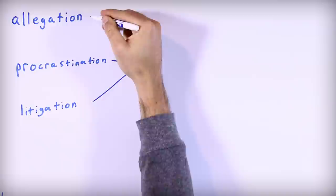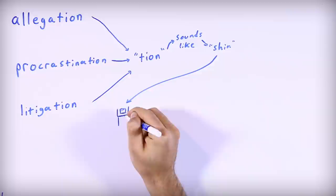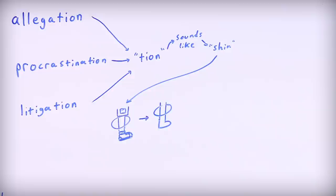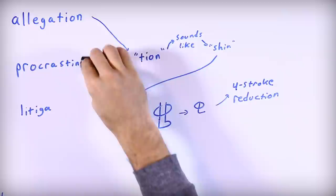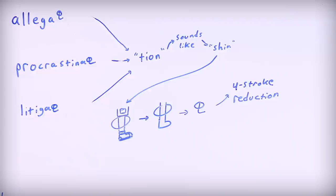Let's take three words: allegation, procrastination, and litigation. All these three words end with the suffix "shun", which in my mind sounds a bit like "shin". So we can just draw a picture of a shin with a foot, circle the shin, and then simplify that drawing down, and then simplify it once more until we have a two-stroke symbol that resembles a shin. Now I can add that as the suffix instead of writing "shun", which is six strokes, and this one is two, so now we have a reduction of four strokes.